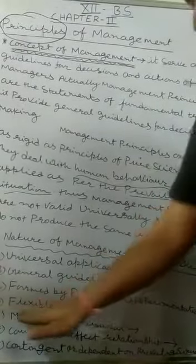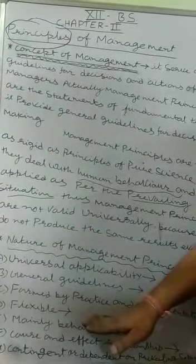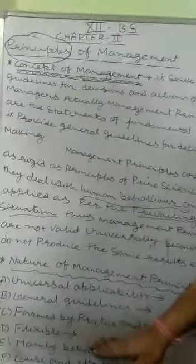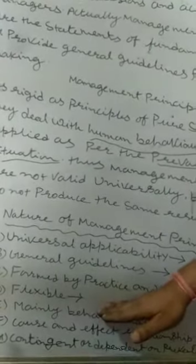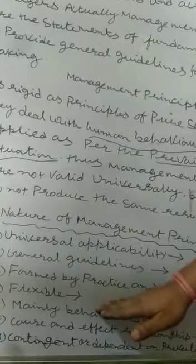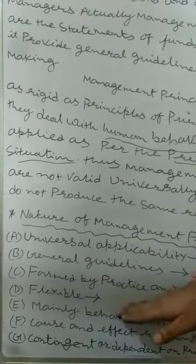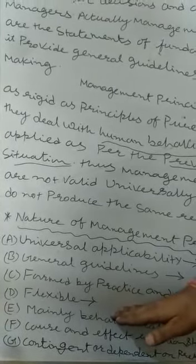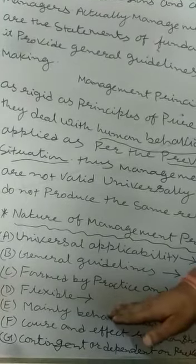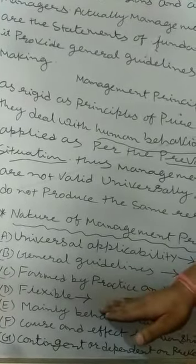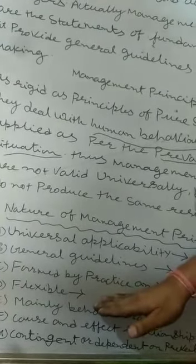Fourth, management principles are Flexible. Management principles are flexible because they have to work in different work situations, with different people and different types of operations. The goal of management — achieving organizational goals — remains the same, but the principles are flexible because they adjust themselves to different work conditions, people, and operations.